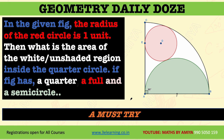Please pause the video and try to solve this question. I hope you have paused and solved it. This is a basic question. The area of the shaded portion equals the area of the red circle, and the radius of the red circle is one.